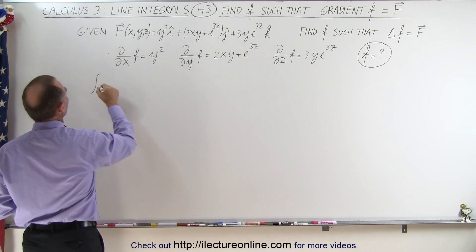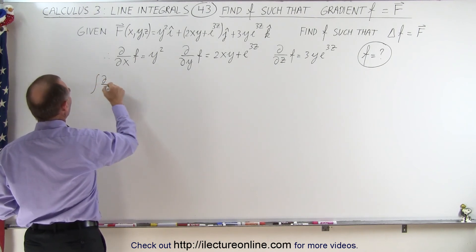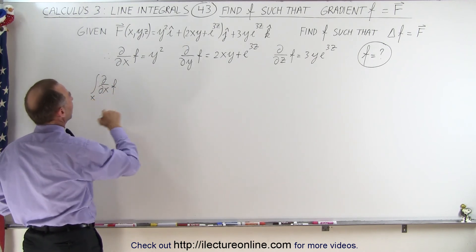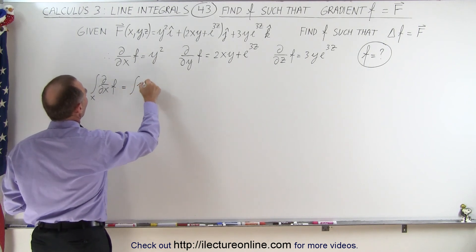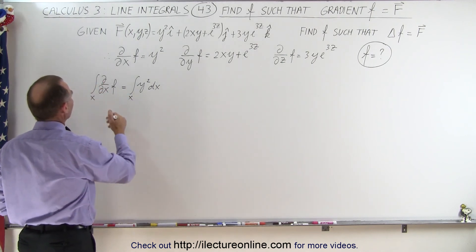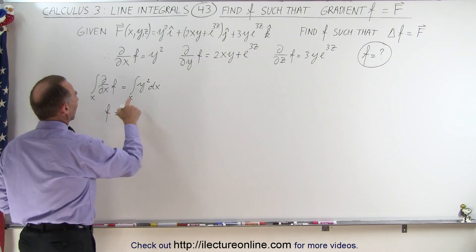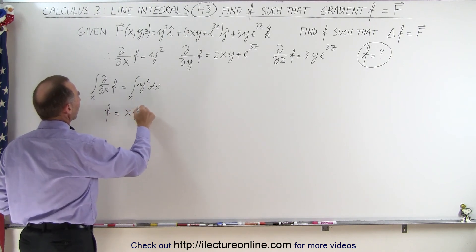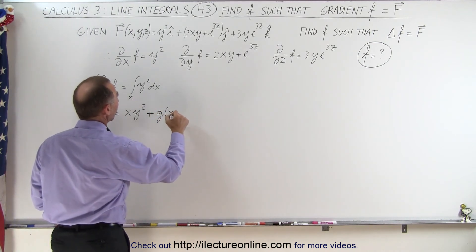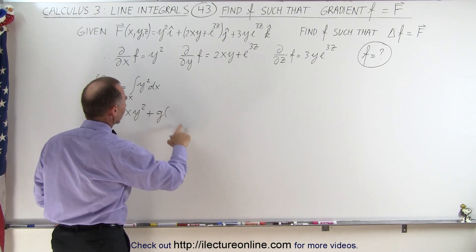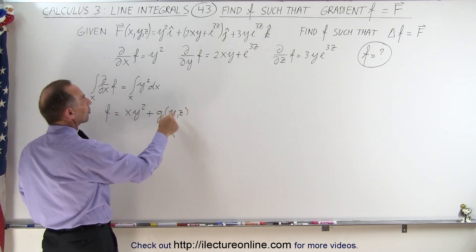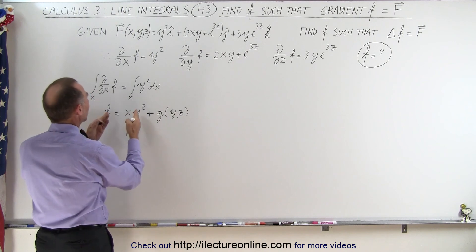We take the integral of the partial with respect to X of F — I'll put a little X here to indicate that we're integrating with respect to X — and this should be equal to the integral of Y squared DX. We will get back the function, and on the right side we get X times Y squared plus another function G, which will be a function of Y and Z, because if we have a function of Y and Z and take the partial derivative with respect to X, this goes to 0 and we end back with what we started.